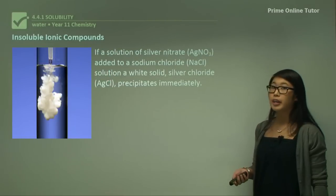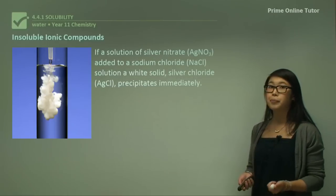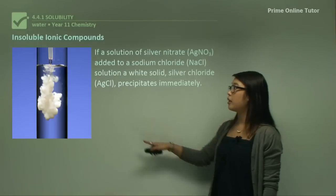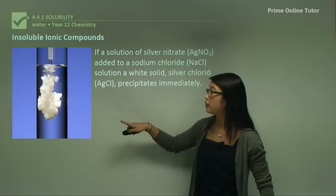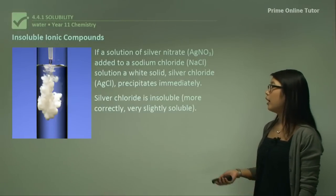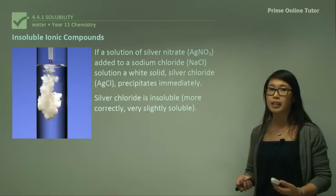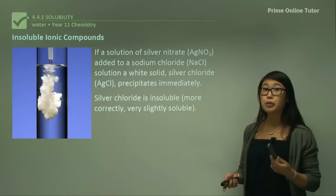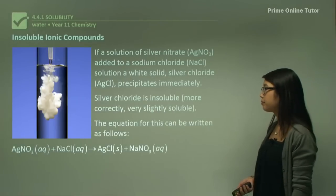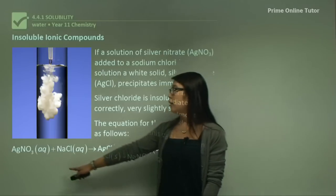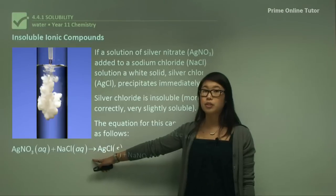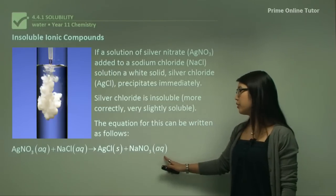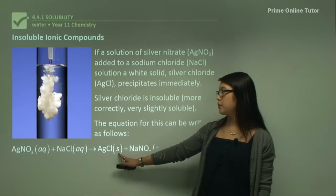If a solution of silver nitrate is added to sodium chloride, a white solid is precipitated out. Silver chloride precipitates immediately — you can see in the picture that just adding a drop will form the white precipitate. Silver chloride is very slightly soluble, but mostly insoluble, which is why we get the white cloudiness. The equation shows aqueous solution mixed with aqueous solution, but in this case we have a solid product — and the other product remains in aqueous solution.